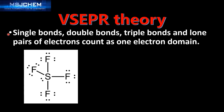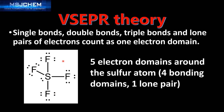Single bonds, double bonds, triple bonds and lone pairs of electrons count as one electron domain. Here we have the Lewis structure for sulfur tetrafluoride. As you can see, there are five electron domains around the sulfur atom — four bonding domains and one lone pair of electrons. In this higher level video we'll consider central atoms with five and six electron domains.